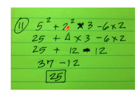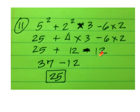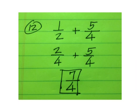Number 11: you have to square 5 and square 2 to get 25 and 4. Then do the multiplication first — don't do 3 minus 6. 4 times 3 is 12, and 6 times 2 is 12. So 25 plus 12, then take 12 away, takes you right back to 25, which is the answer.